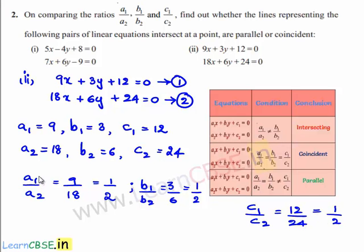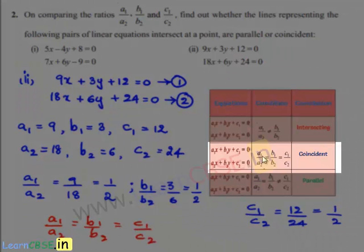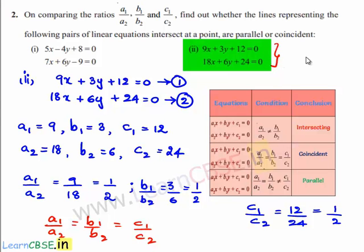If we observe the values of a1 by a2, b1 by b2, and c1 by c2, all three values are equal to 1 by 2. So we can conclude that a1 by a2 is equal to b1 by b2 is equal to c1 by c2. By using the second condition, if a1 by a2 is equal to b1 by b2 is equal to c1 by c2, the given set of equations represent coincident lines.